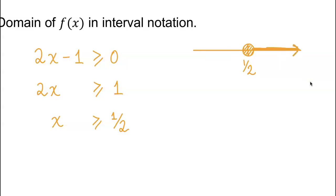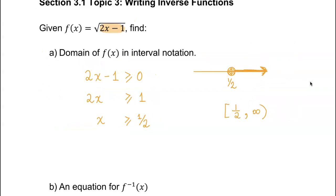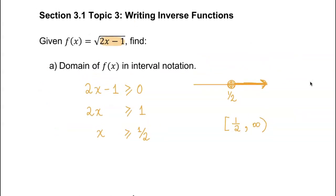That will be the graph of this interval. In interval notation, we write bracket 1.5, comma, positive infinity — because that's all the way out to the right. So that is the domain of f(x).